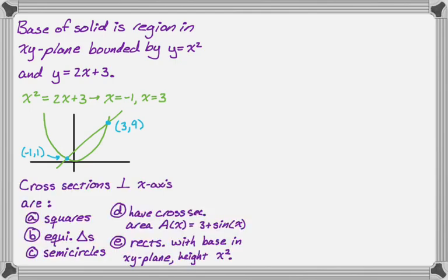So we're told what the cross sections look like. Cross sections perpendicular to the x-axis are, we're going to deal with five of them: squares, which is probably the most common thing, equilateral triangles which has a factor in front of it that you want to memorize, and semicircles you definitely want to memorize.